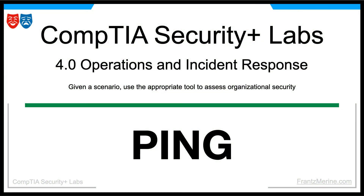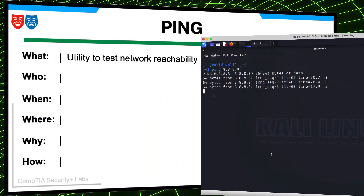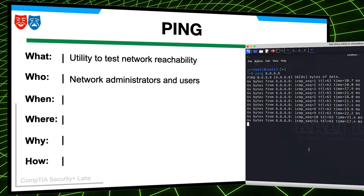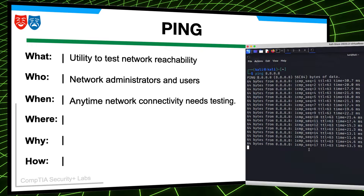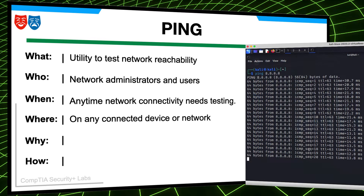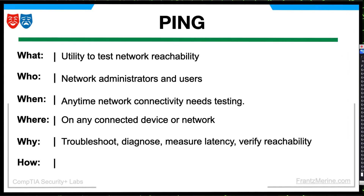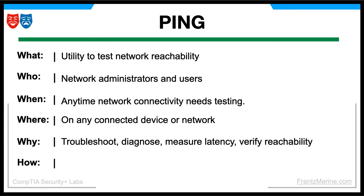In this lesson, we will use the ping utility to assess organizational security. Ping is a utility used to test the reachability and responsiveness of a network host or IP address. Network administrators and computer users use ping at any time when network connectivity needs to be tested or diagnosed, on any computer or device connected to a network, whether a local area network or the internet. Ping is used to troubleshoot connectivity issues, determine network delays, identify packet loss, and verify if a host or IP address is reachable.